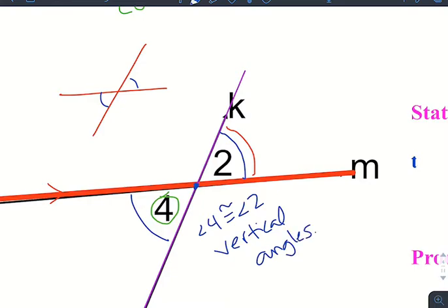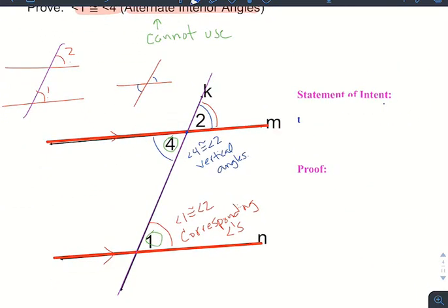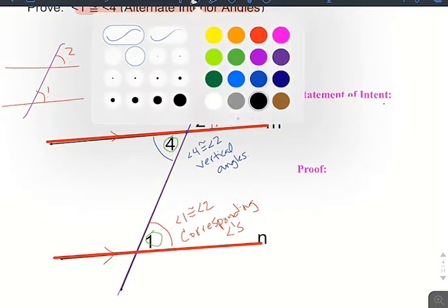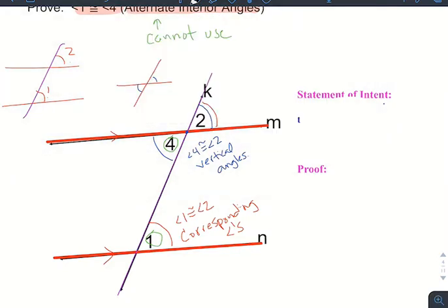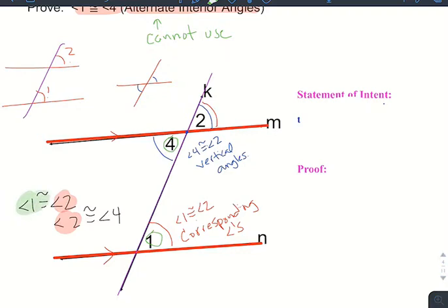Our goal was to show angle 1 and angle 4 are congruent, but look at what we have so far. We have angle 1 is congruent to angle 2 right here. But then using vertical angles, we also know angle 2 is congruent to angle 4. Wait a minute. If angle 1 is congruent to angle 2 and angle 2 is congruent to angle 4, it should stand to reason that angle 1 and angle 4 are congruent.